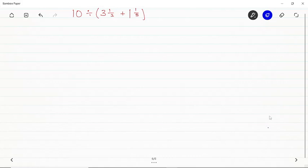Welcome, my name is Awatch. I have this question I want us to solve: 10 divided by brackets open, three whole number one over two plus one whole number one over five. Now before we continue, if you're